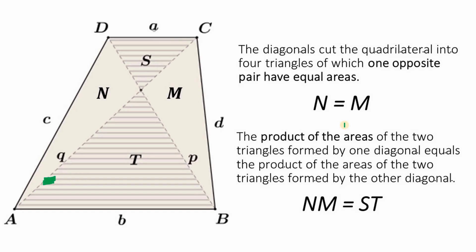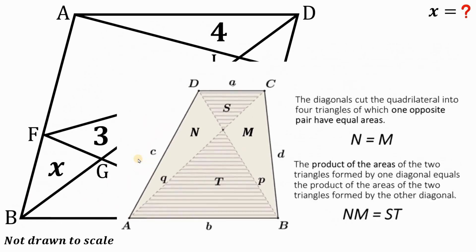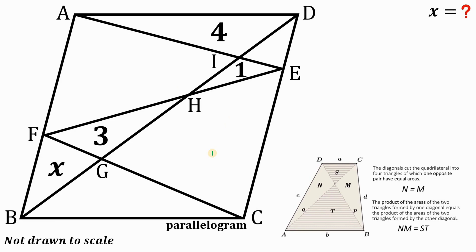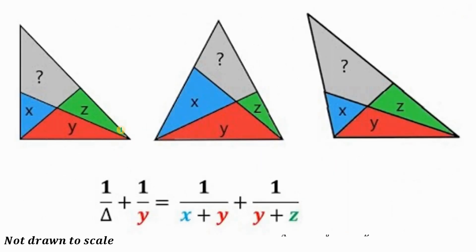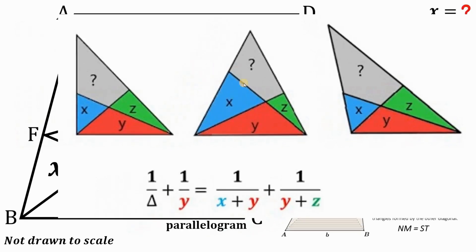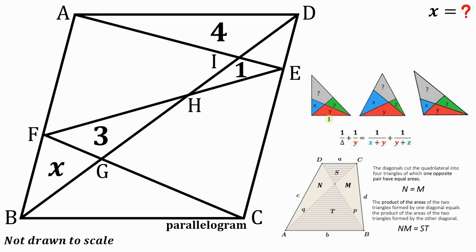In our figure, area N equals area M. The second concept is that the product of the areas of two triangles formed by one diagonal equals the product of the areas of two triangles formed by the other diagonal — in short, N times M equals S times T. We will also use what we call the ladder theorem: 1 over the area of the whole triangle plus 1 over the bottom part Y equals 1 over (X plus Y) plus 1 over (Y plus Z).